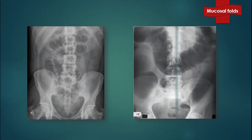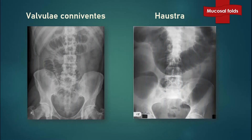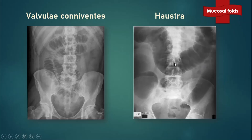Let's look at what valvulae conniventes and haustra look like in the diagram. In this diagram, the bowel placed centrally and dilated shows valvulae conniventes — lines passing through the whole lumen. In haustra, you don't clearly see lines passing through the whole lumen; they are just more on the side. The centrally placed dilated bowel represents small bowel obstruction, while the peripheral one represents large bowel obstruction.